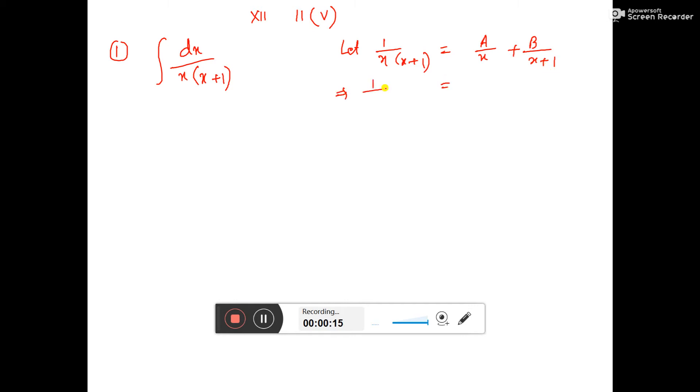If you take the LCM on the right side, you get x into x plus 1 on the denominator. On the numerator, you have a into x plus 1 plus b into x. Canceling the denominators, you get 0x plus 1 equals a into x plus 1 plus bx. This is equation number 1.